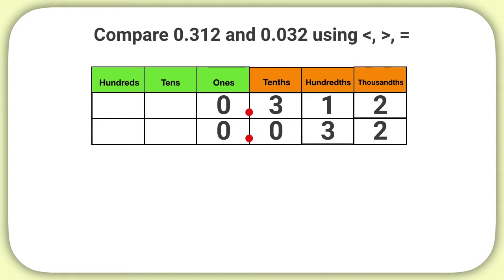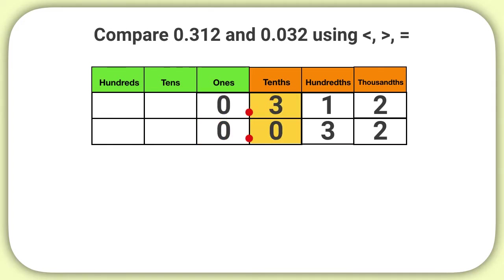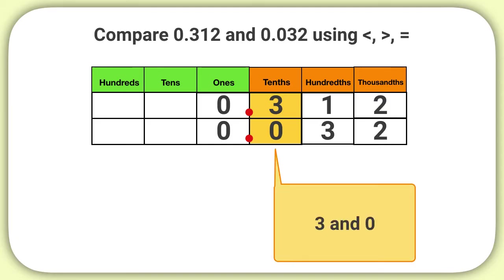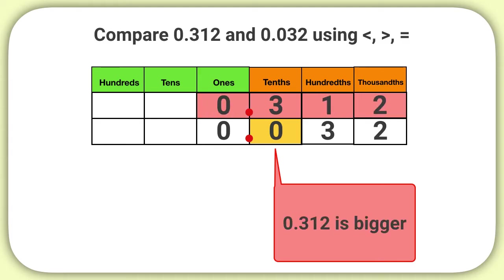Which place value should I look at first to compare these numbers? Both of these numbers have a digit in the ones place, so I need to start there. Since 0 and 0 are the same, I move to the right to compare the digit in the tenths place. I see that 3 and 0 are different. Which is greater, 3 or 0? The number with the 3 in the tenths place — 312 thousandths — is greater than 32 thousandths.